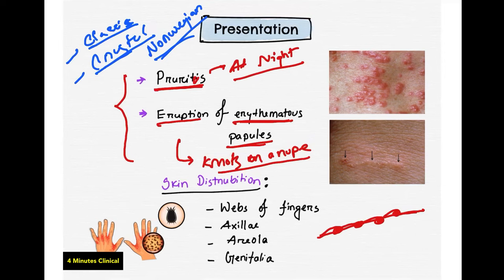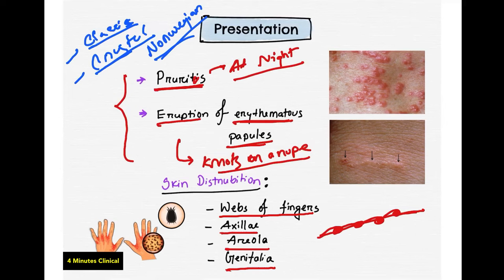There is a specific skin distribution where scabies commonly appears on the body. We have the classic presentation on the webs of the fingers and the axilla area. The eruption of erythematous papules, skin burrows, and intense severe itching at night — this is classic scabies.